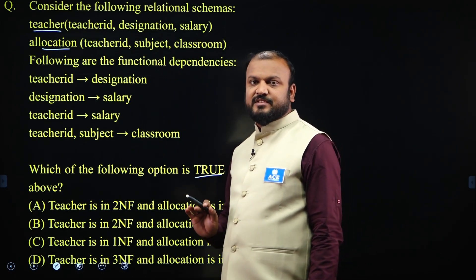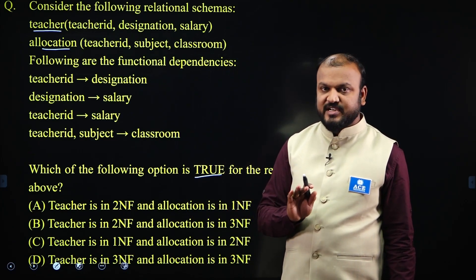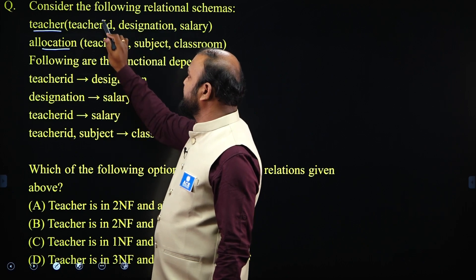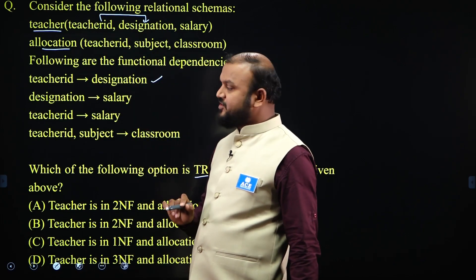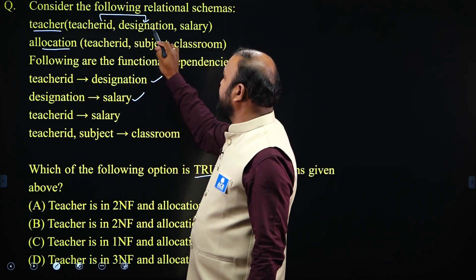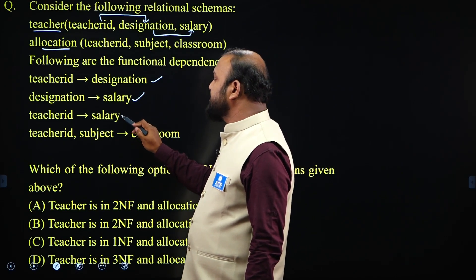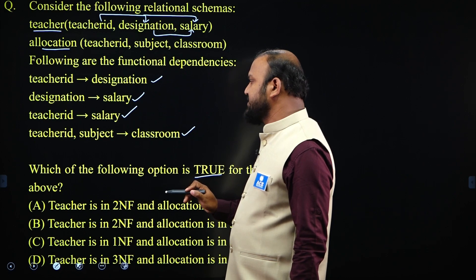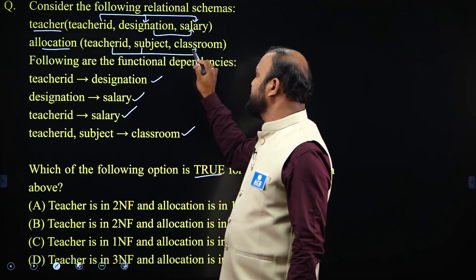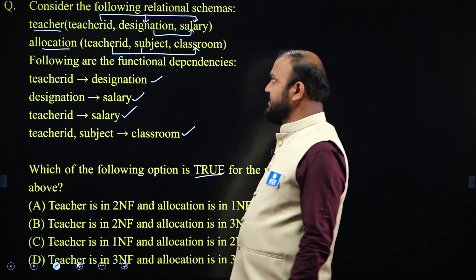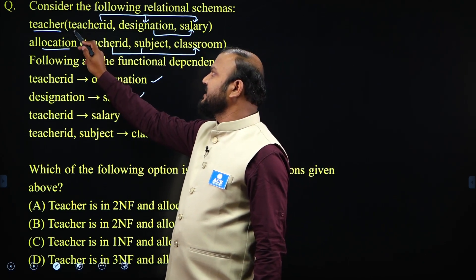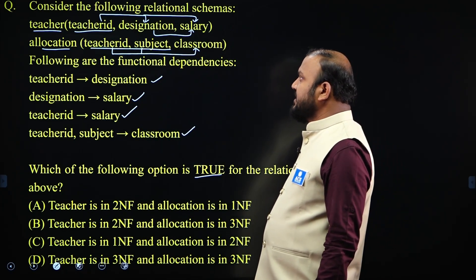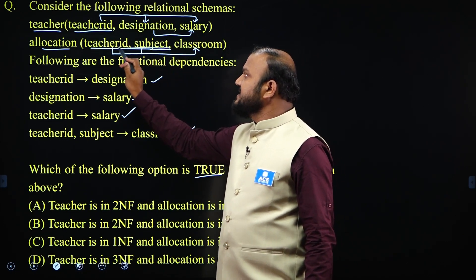How to find the normal form of a relation? Normal form of a relation is decided based on the functional dependencies and primary keys. In the teacher relation, we have a dependency: teacher ID → designation, and designation → salary, both satisfying in the teacher table. Teacher ID → salary also satisfies. The fourth dependency, teacher ID and subject together → classroom, satisfies in the allocation table. So teacher ID is the primary key of teacher, and teacher ID + subject is the primary key of allocation.